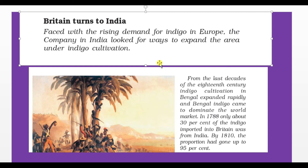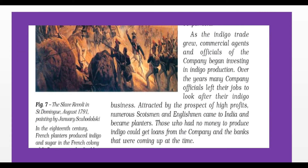In 1788, only about 30% of Indigo imported into Britain was from India, but by 1810 the proportion had gone up to 95%. As the Indigo trade grew, commercial agents and officials of the company began investing in Indigo production.